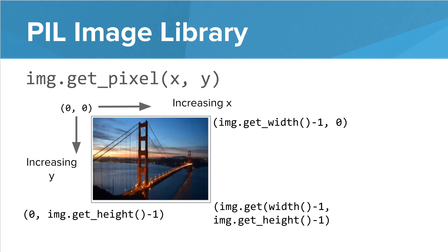Our pixel values follow the same structure we saw with the canvas. (0,0) is the top left corner. As we move from left to right, our x values increase. We can use image.getWidth to help find the maximum value of our image. Note that we subtract 1 since the width returns the actual size, but the index values go from 0 to less than the size. Similarly, the y values increase as we go down, and we can use image.getHeight to find the maximum value of y.